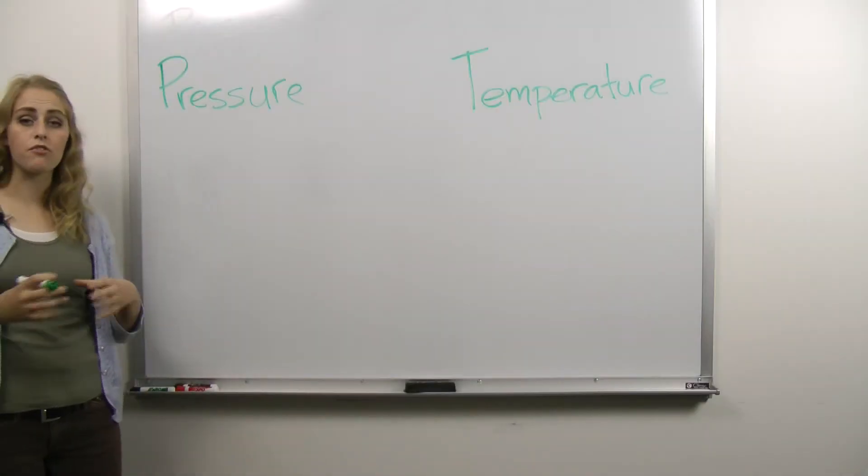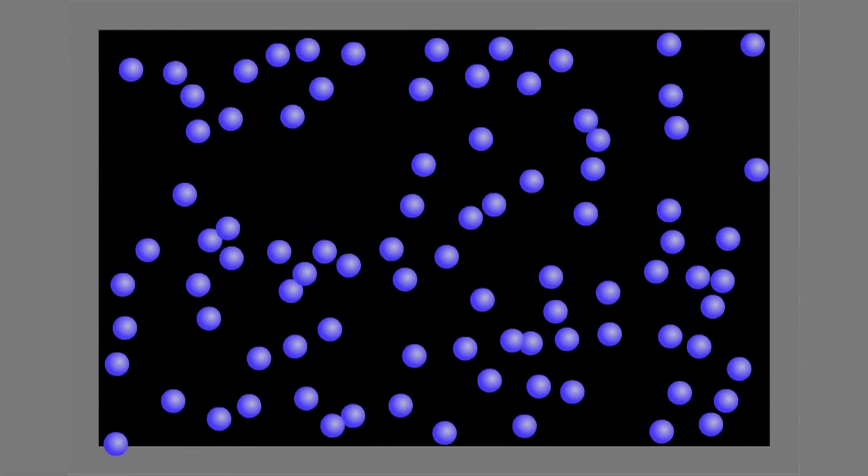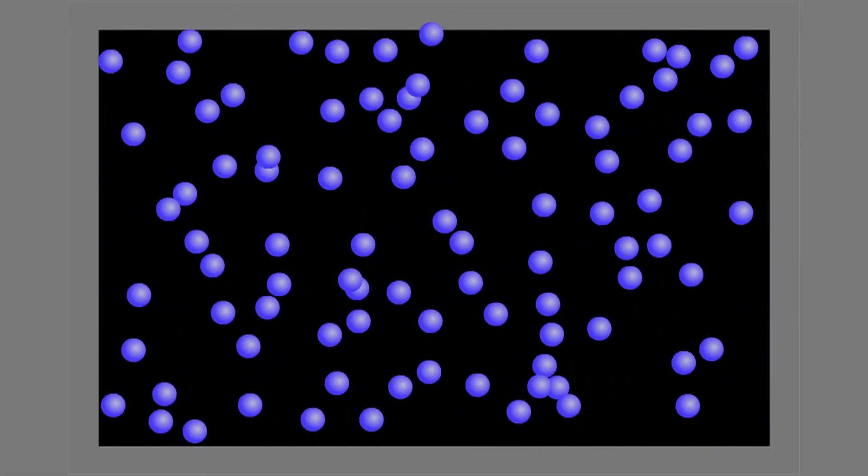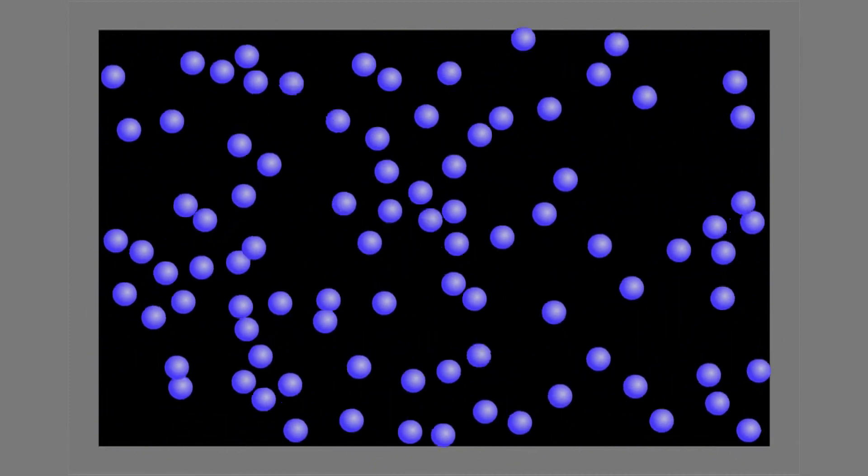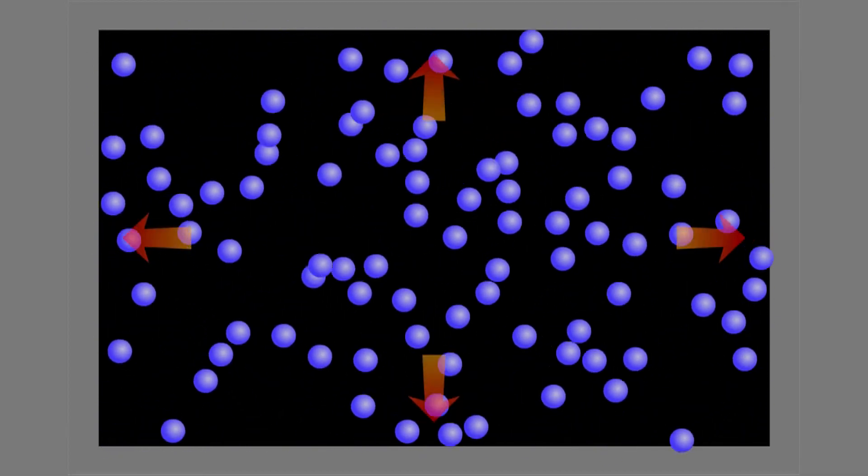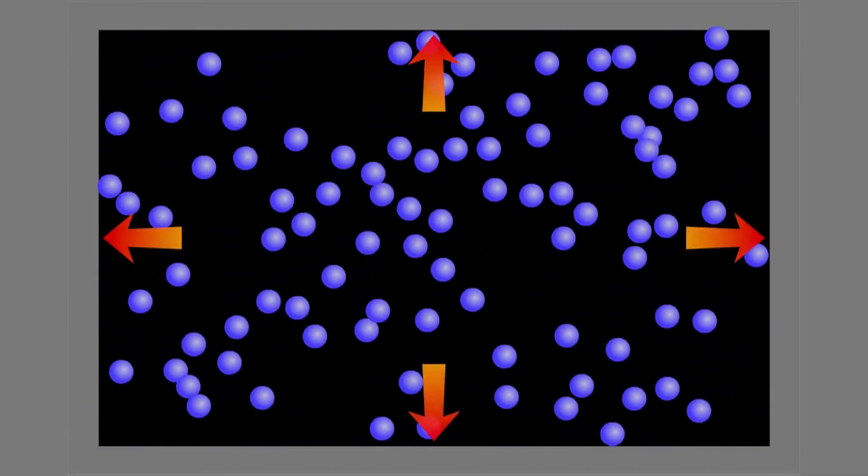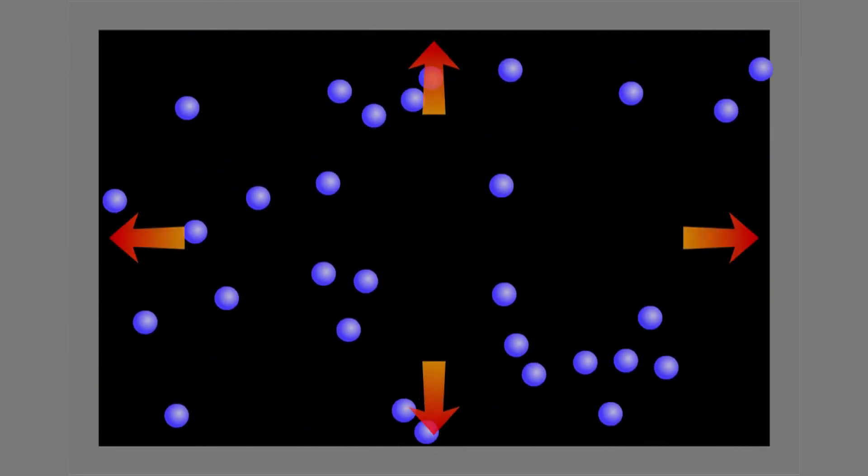Pressure is a measure of the force on the walls of the canister. Inside our canister, we have a lot of molecules that are zooming around, running into each other and running into the walls. Every time they run into the walls, they hit with a force outward, and it's that force that leads to the pressure that we measure. When we decrease the number of particles in the canister, they don't hit the walls as often, and so the pressure decreases.